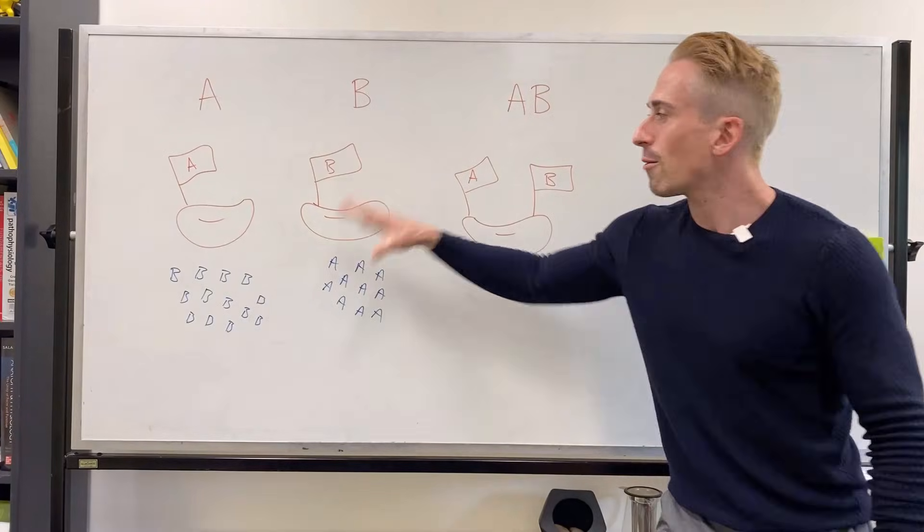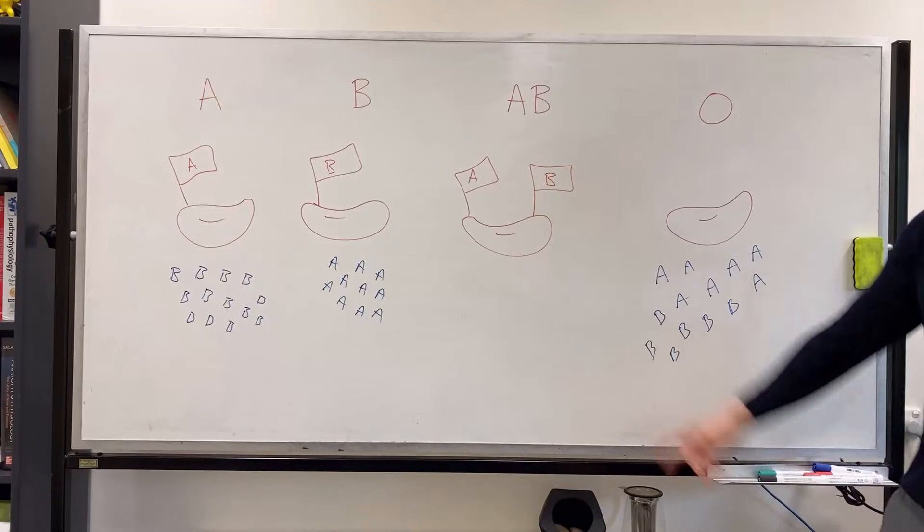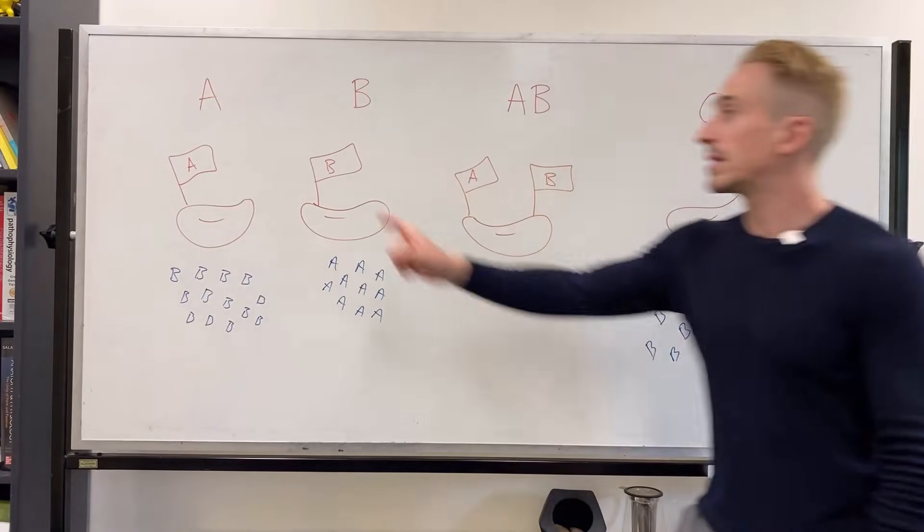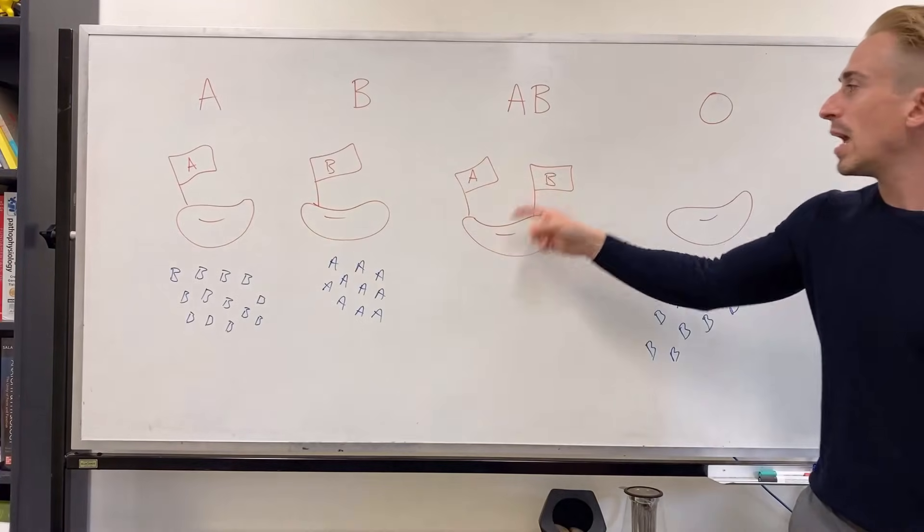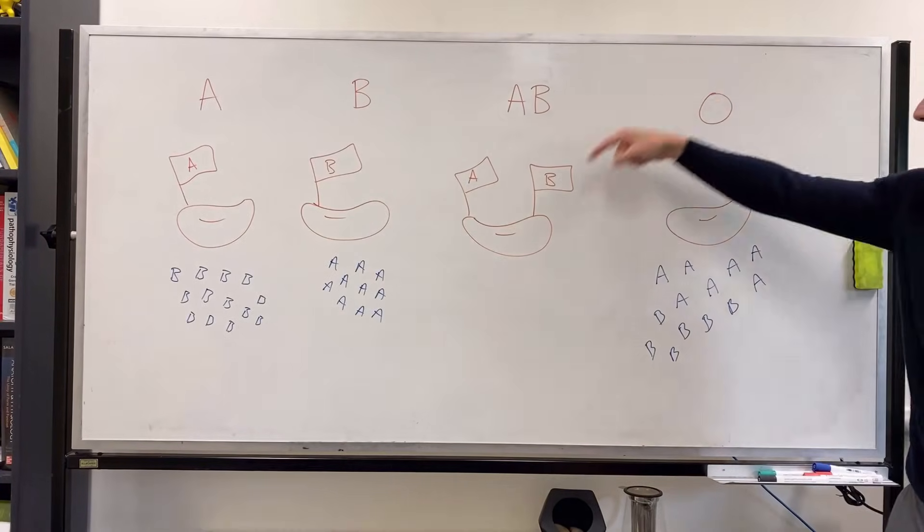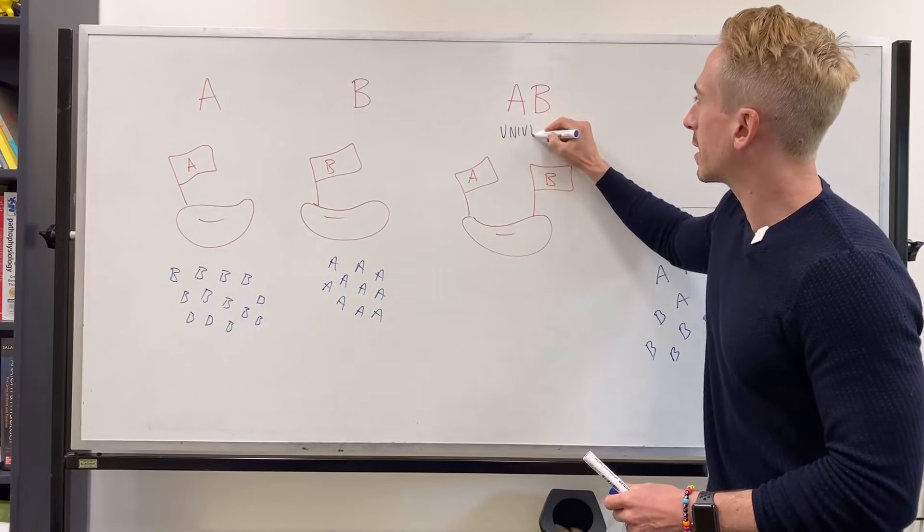For B, it can't receive A, it can't receive AB, but B can receive O. AB can take blood from A, AB can take blood from B, and AB can take blood from O, and they're recognized as the universal acceptor.